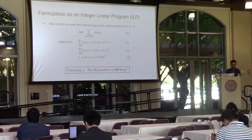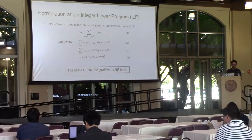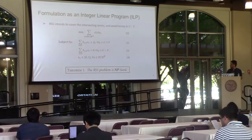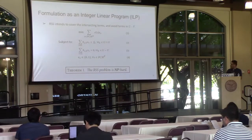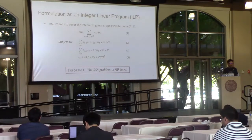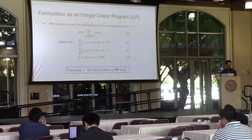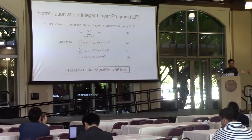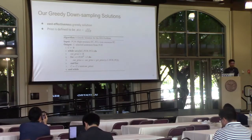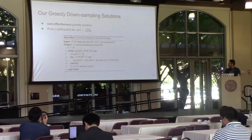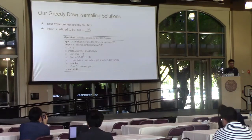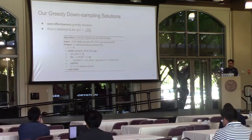We formulate this with integer linear programming. The key takeaway from these formulations is that we prove in the paper that this down-sampling problem is actually an NP-hard problem. For approximating it, we designed two greedy down-sampling solutions, both based on a cost-effectiveness price function definition.